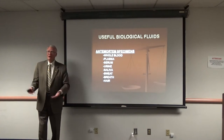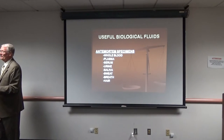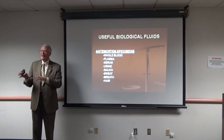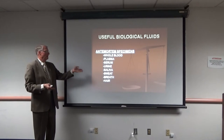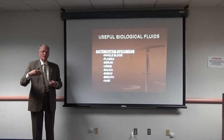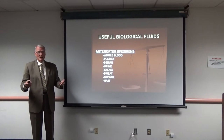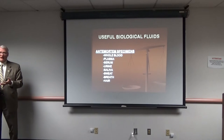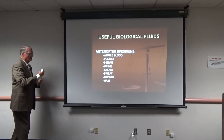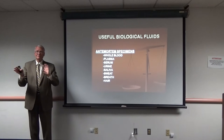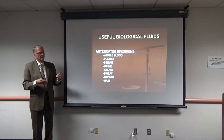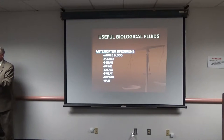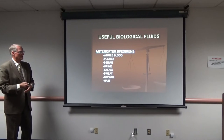Most of you in this audience deal with people who are alive, so when dealing with ante-mortem samples, you primarily deal with blood and its components — plasma or serum — depending on how it's processed, whether in a hospital or crime lab. In today's toxicological environment, we can also use urine, saliva, sweat patches, expired breath, and hair follicle testing, because hair gives you information that other biological fluids may not. However, hair testing also has limitations, and we'll go into that later.